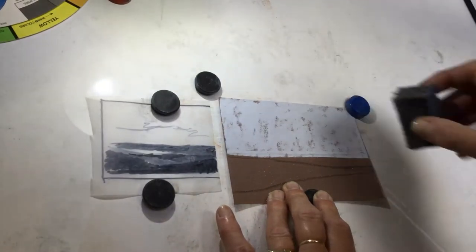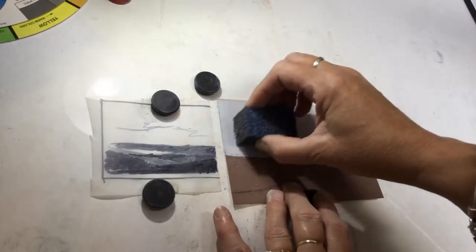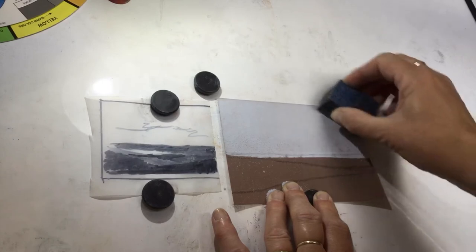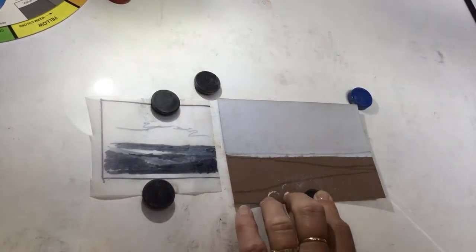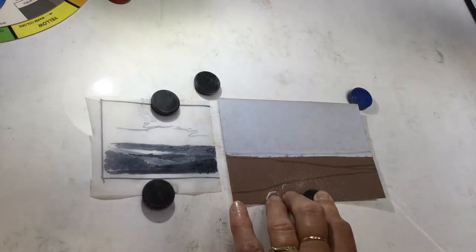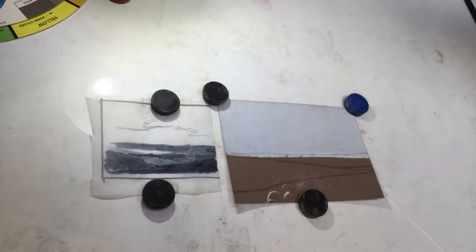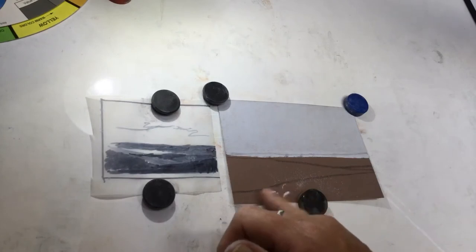I just want to rub that into the pastel mat. The materials I'm using: my preferred surface is Clairefontaine pastel mat and I'll be using a combination of unison pastels and Terry Ludwig.